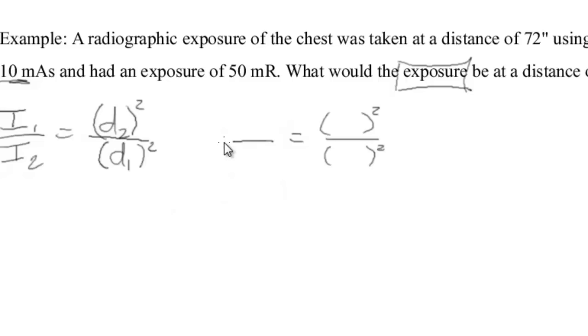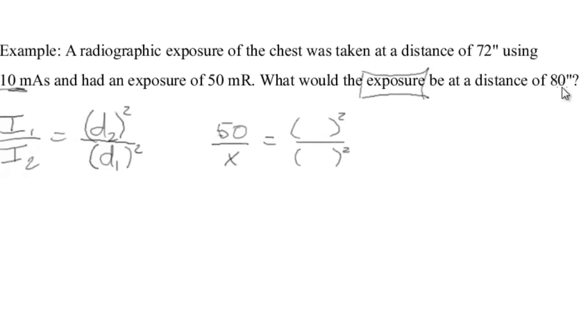We're just filling in four values here. Intensity 1 we are going to define as 50 because that was the original intensity. Intensity 2, that's what we're asking for. So we're going to put 50 over x equals D2 squared. So our second distance found right here is going to be 80. And our first distance is right here, 72 inches.